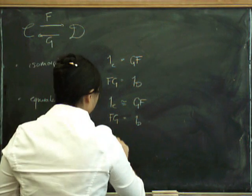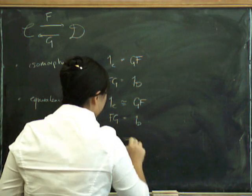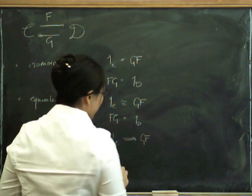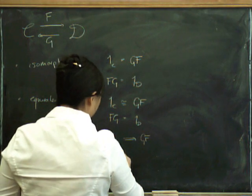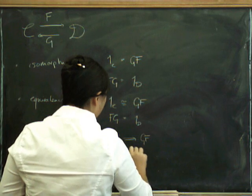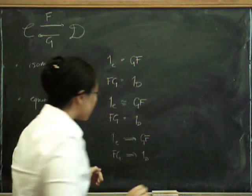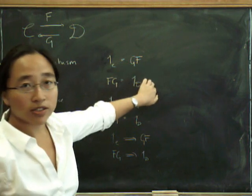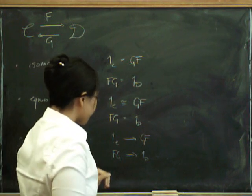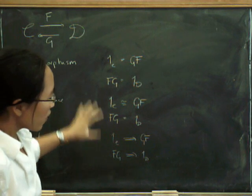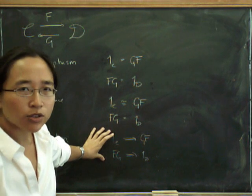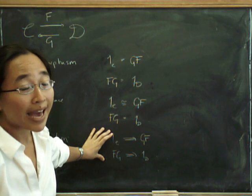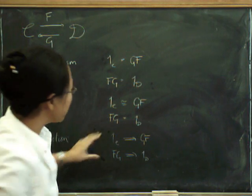We have a natural transformation in this direction, which is going to be called the unit, and a natural transformation in this direction. The directions here are very important. And now we can see why I wrote the unit on this side here all that time ago. Of course, when we specify natural transformations like this, they can't just be any old natural transformations.